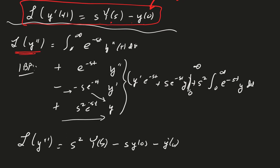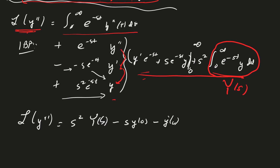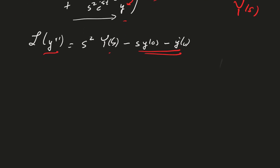Similarly, we took the Laplace transform of y double prime by definition, integrated by parts twice, which brought the double derivative down to the original function. We wrote out what we had, recognized that part of the expression is Y(s), and evaluated from 0 to infinity. The Laplace transform of y double prime is s squared times Y(s) minus s times y(0) minus y prime of 0.